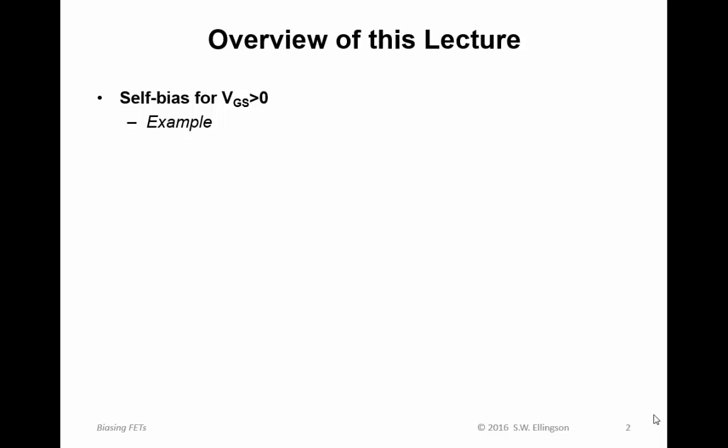Here's an overview of this lecture. First we'll talk about self-bias for field effect transistors and there's really two cases. The first case is when the gate source voltage is greater than zero, and I'll show you an example. The second case is when the gate source voltage is less than zero, and I'll show you an example of that.